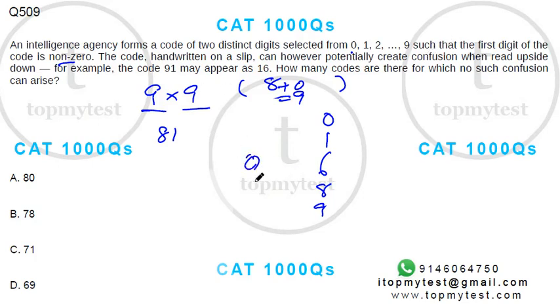Now if I use zero, I can use zero only in the last place. So if I put 90, when I invert it, it can become 06. But the agency knows the first digit cannot be zero, so they will invert it and read it as 90.